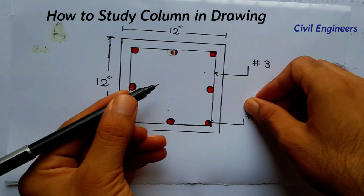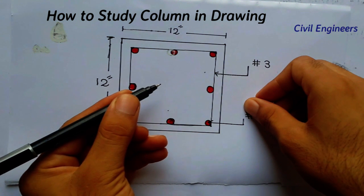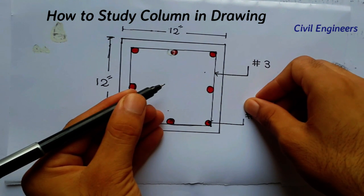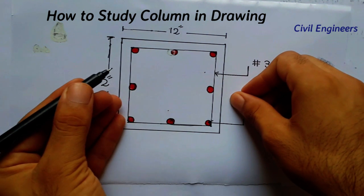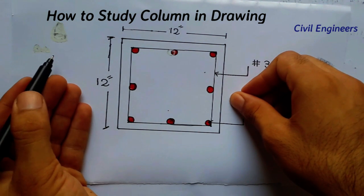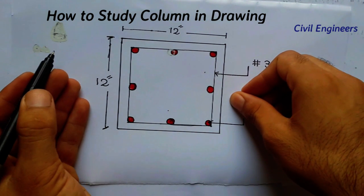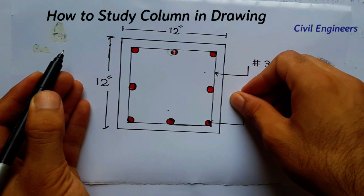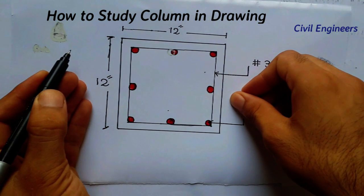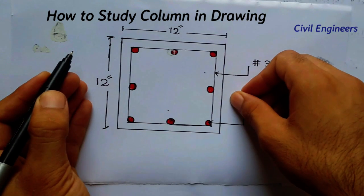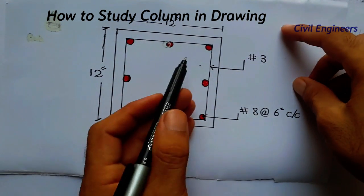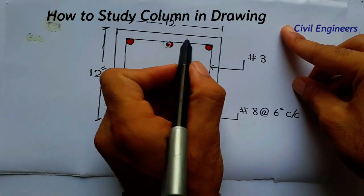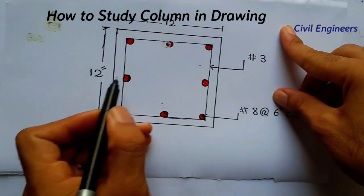Please share this video with your friends and subscribe to this channel for more civil engineering videos. When you click the subscribe button, press the bell icon so you will get notifications. Now let's start — this is the column with dimensions of 12 inches by 12 inches.